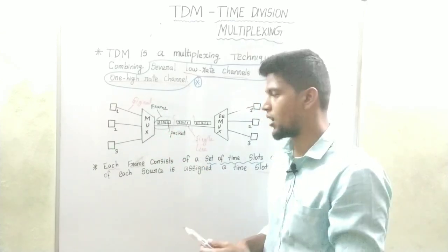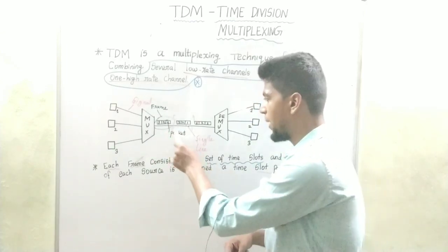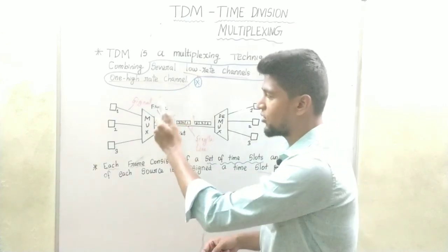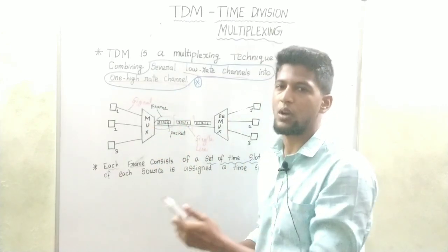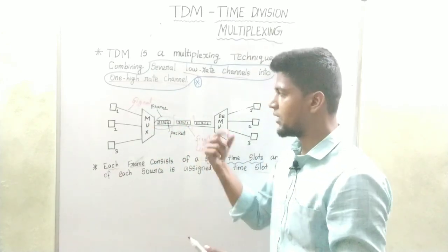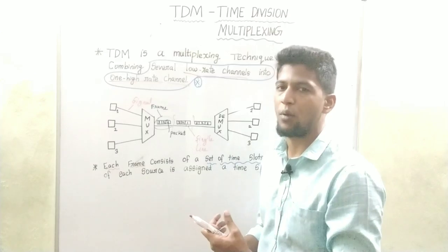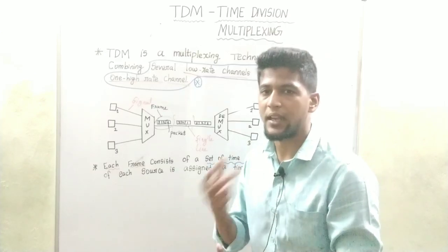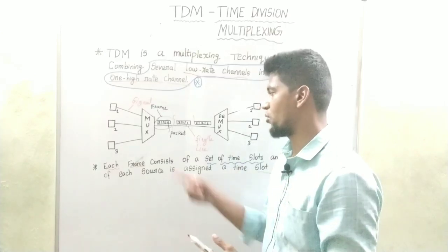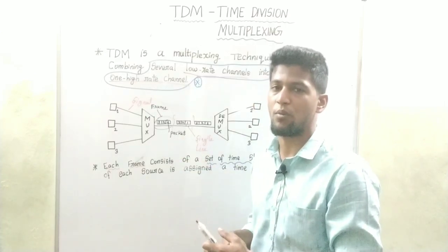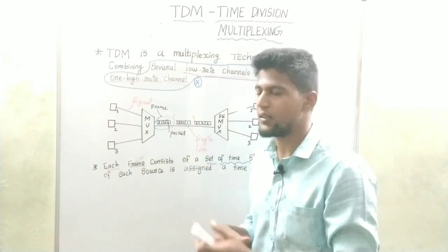Frames — the packets are in a frame. If you have a frame, you can transmit a MAC address. If you have a packet, you can transmit an IP address.